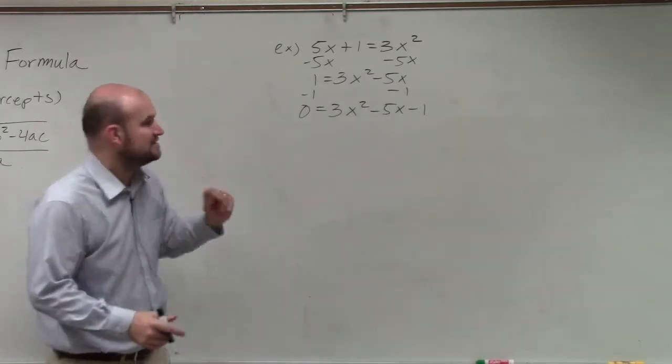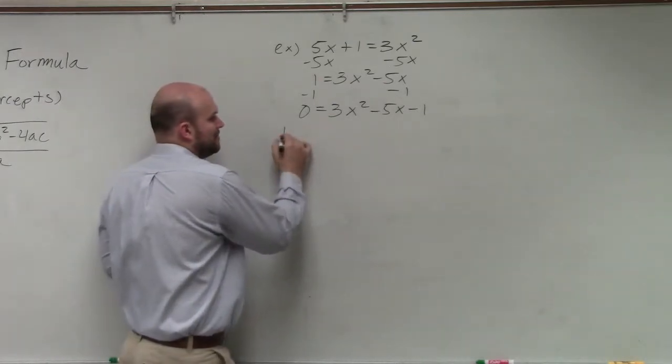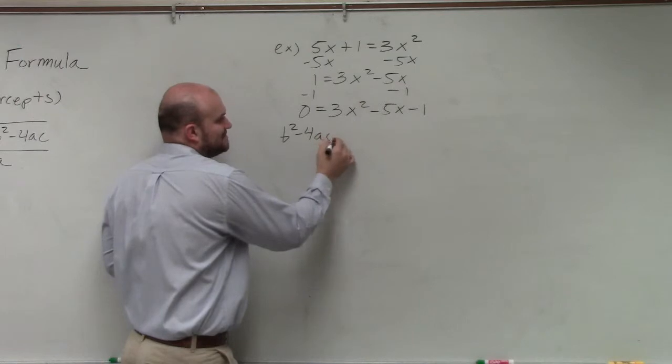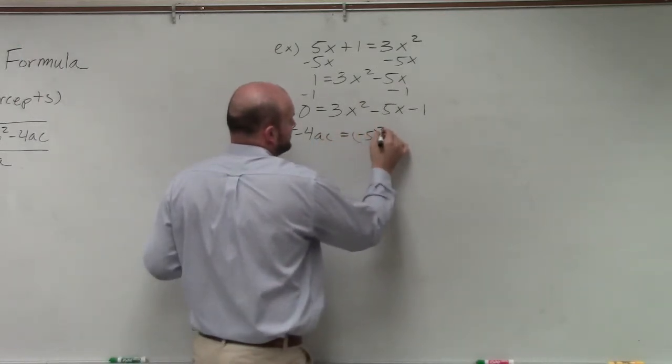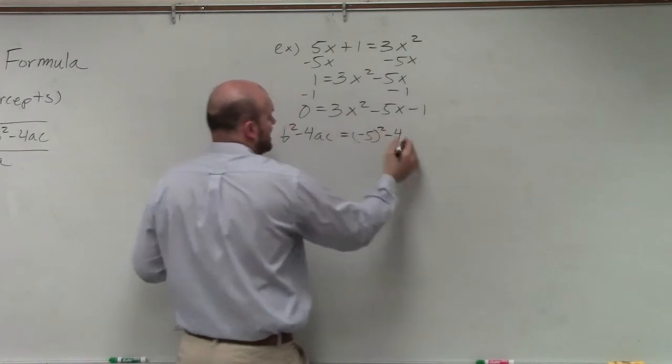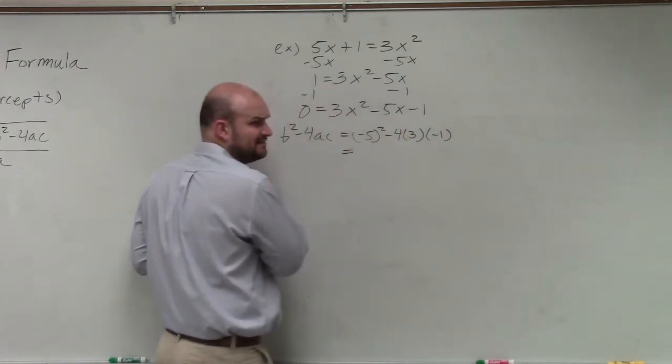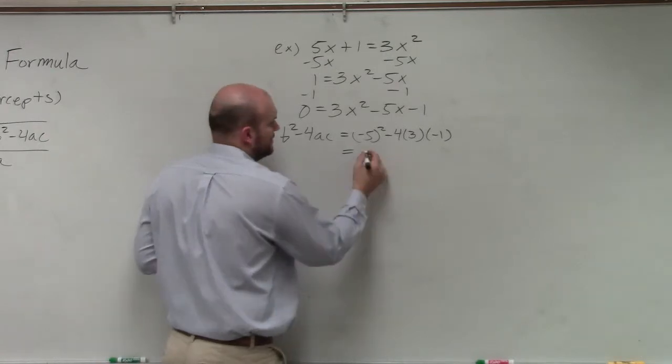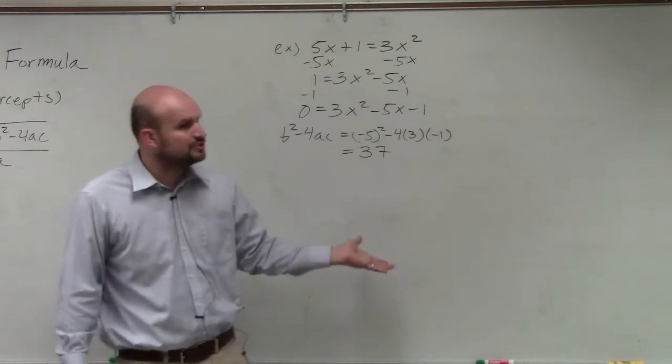So when we're doing quadratic formula, the first thing we're going to want to do is find the discriminant. So we're just going to do b squared minus 4 times a times c, which the student already did, right? So that's going to be negative 5 squared minus 4 times a times negative 1. And we got what, 37? So we know that there's going to be two irrational solutions.